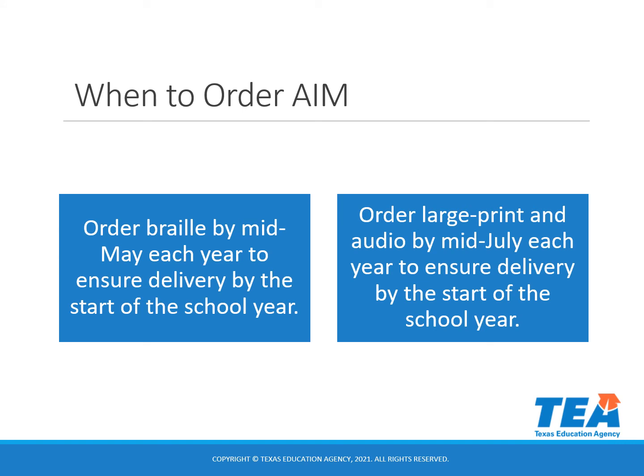It's always a good idea to order AIM as soon as you know that a student will need it. Many districts place their AIM orders when EMAT first opens for the upcoming school year. We suggest you order Braille by mid-May each year to ensure delivery by the start of the school year, and order large print and audio by mid-July each year to ensure delivery by the start of the school year.